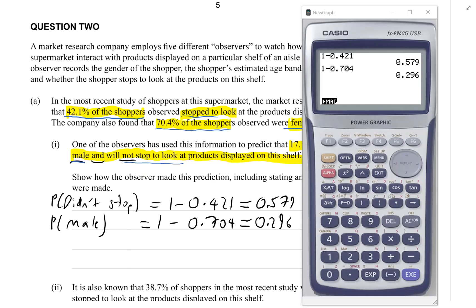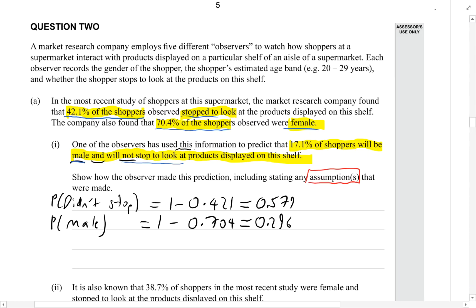So using these two figures, because these are the only two figures they could have used, how could they have arrived at the 17.1%? Pause the video and have a think about it.